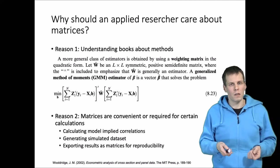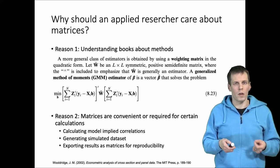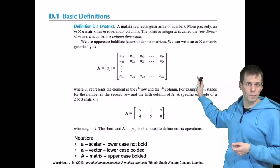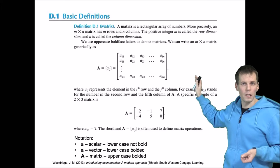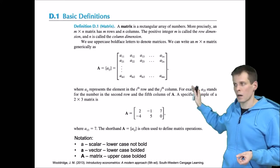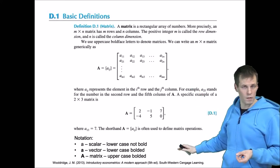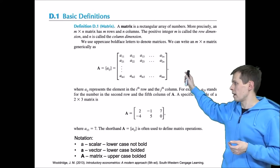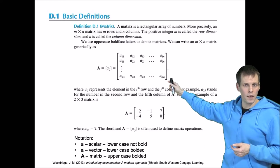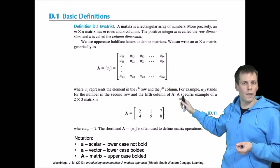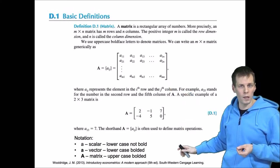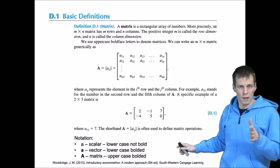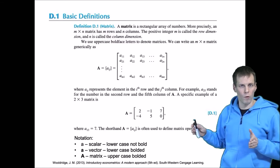A matrix is basically a two-dimensional array of numbers, and it can be contrasted with scalars, which are single numbers. A scalar is usually marked with a lowercase, non-bolded letter. If we have a bolded lowercase letter, that is a vector, which is basically a matrix with only one column or one row.